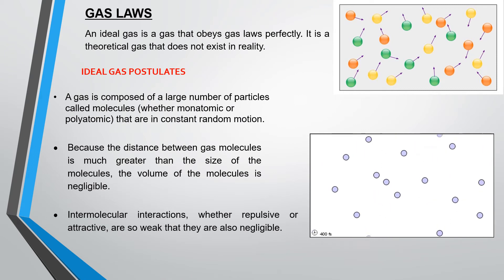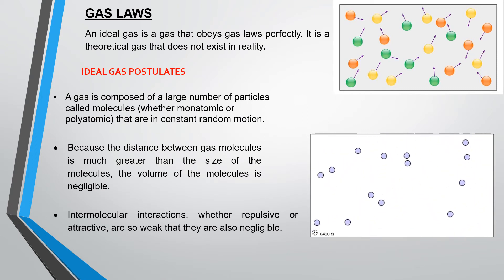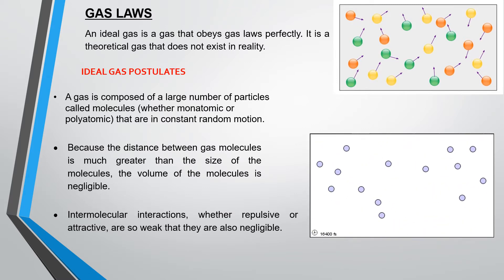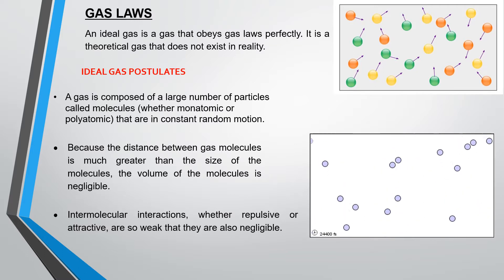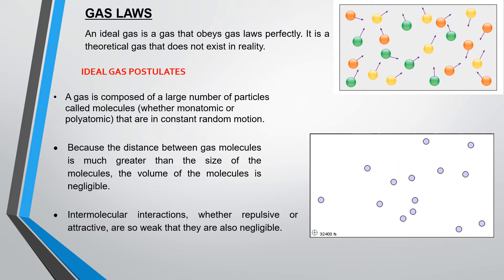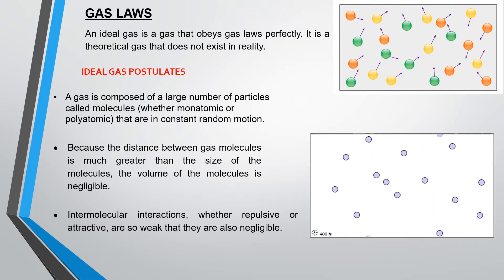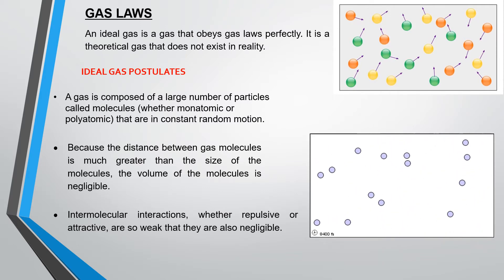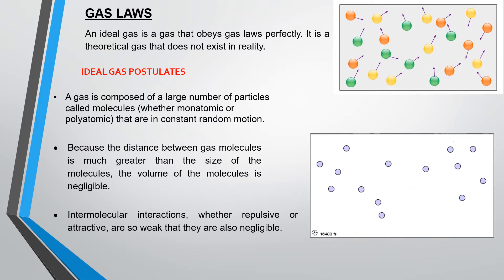The intermolecular attraction between ideal gas particles is negligible as well. In order for molecules to have intermolecular attraction with each other they must be close enough to each other. Real gases are a little bit closer to each other which is why they have intermolecular attractions. But for an ideal gas they are very far away from each other, therefore there is no chance of them having an intermolecular attraction.